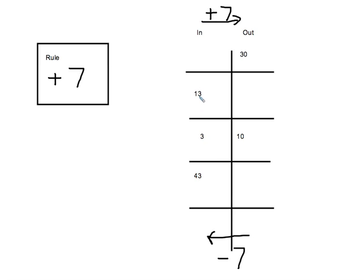So I start with the ones I do know: 13 plus 7 gives me 20. 43 plus 7 gives me 50. There's only one where I don't know the in — it's something plus 7 equals 30. We know from our fact families we can turn that into a subtraction problem: 30 minus 7 equals 23. You may have noticed the pattern that they all have 3 in the ones place, so the outputs all have 0 in the ones place. Just a little trick to pay attention to.